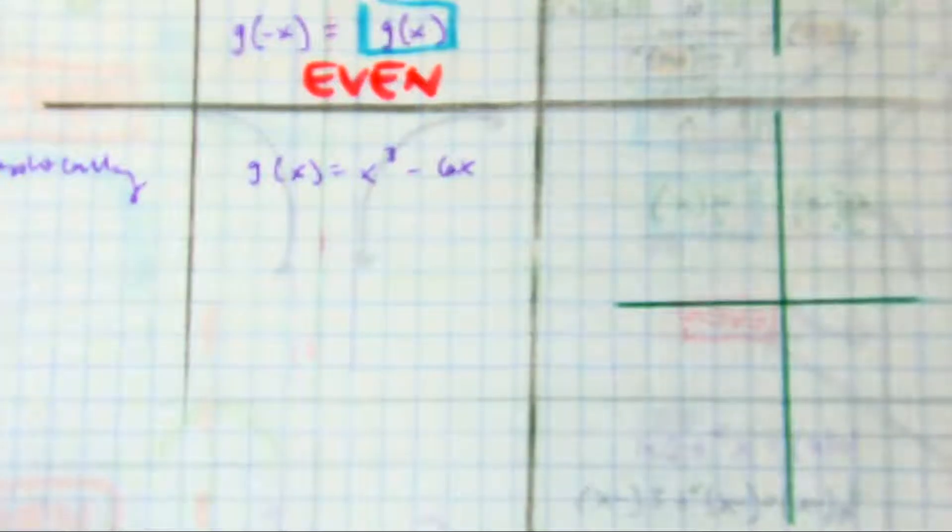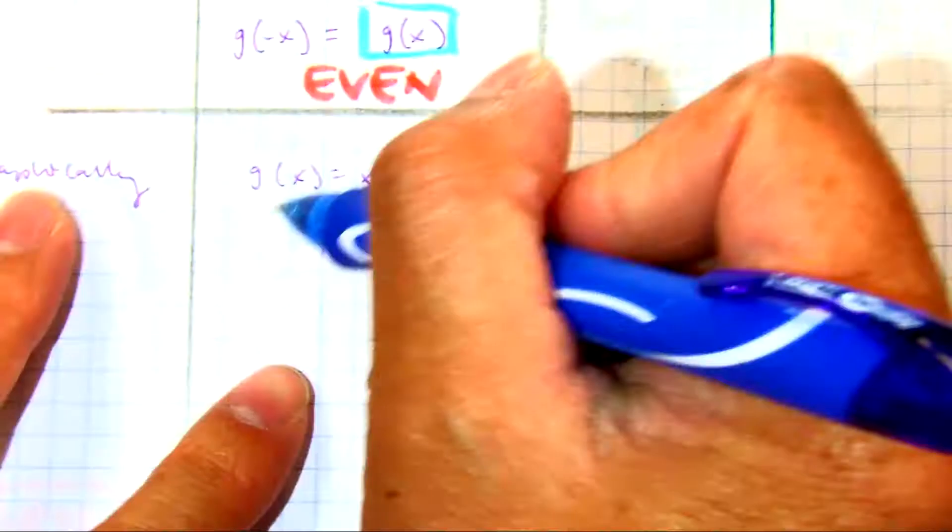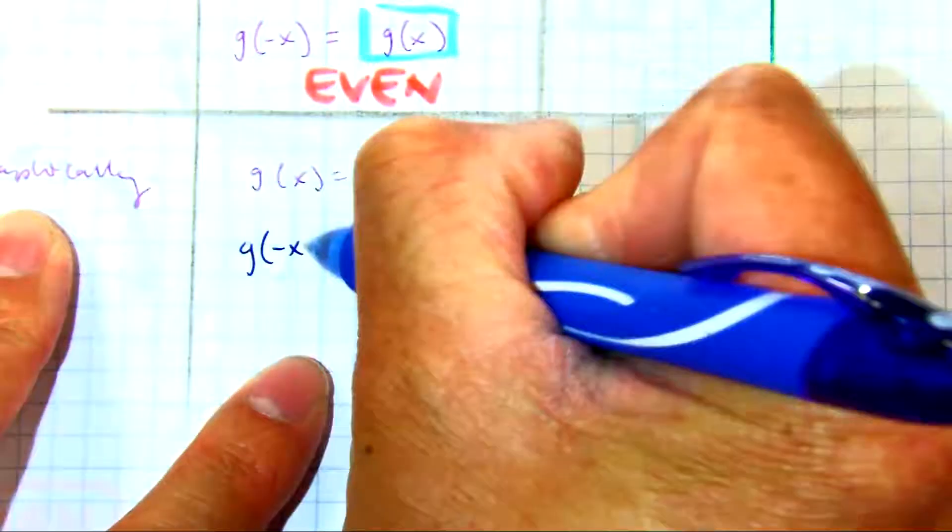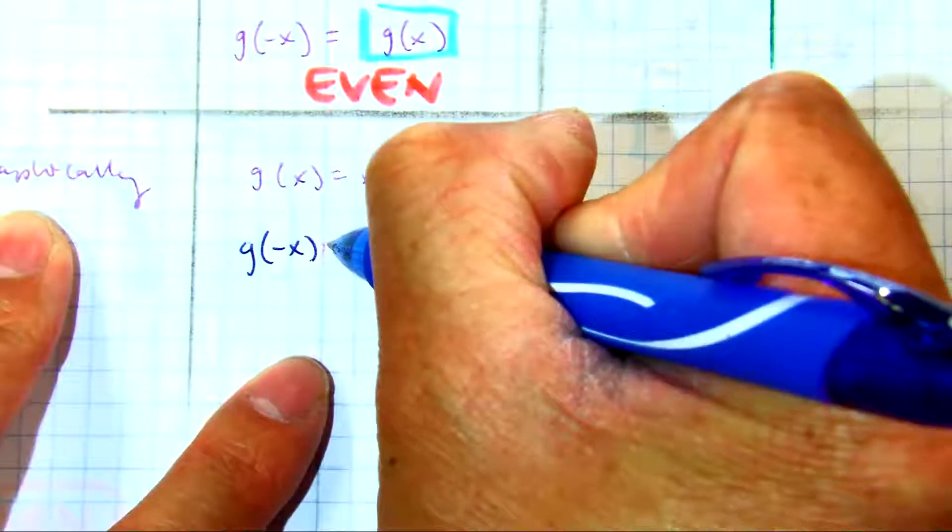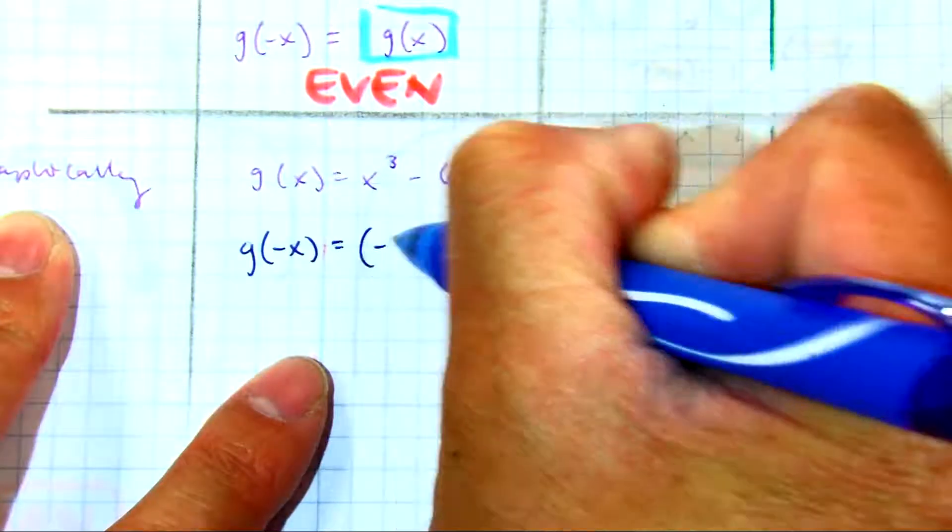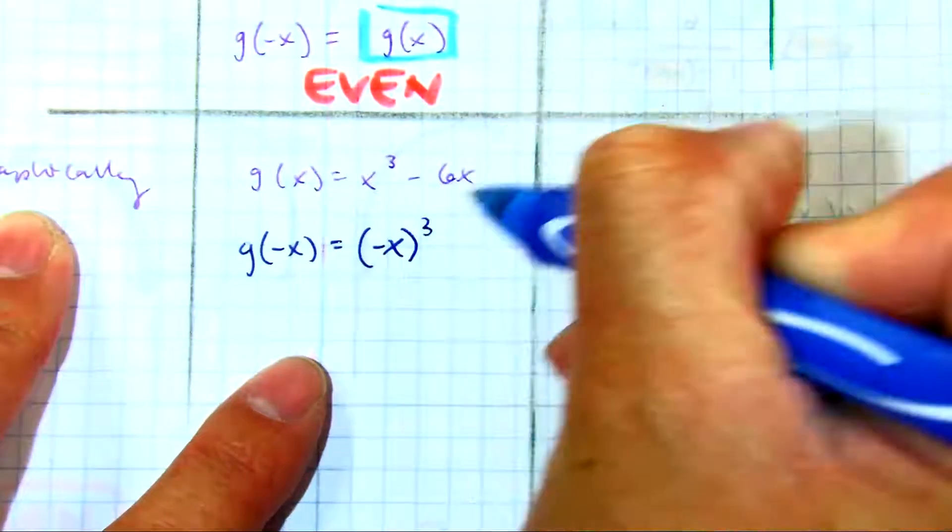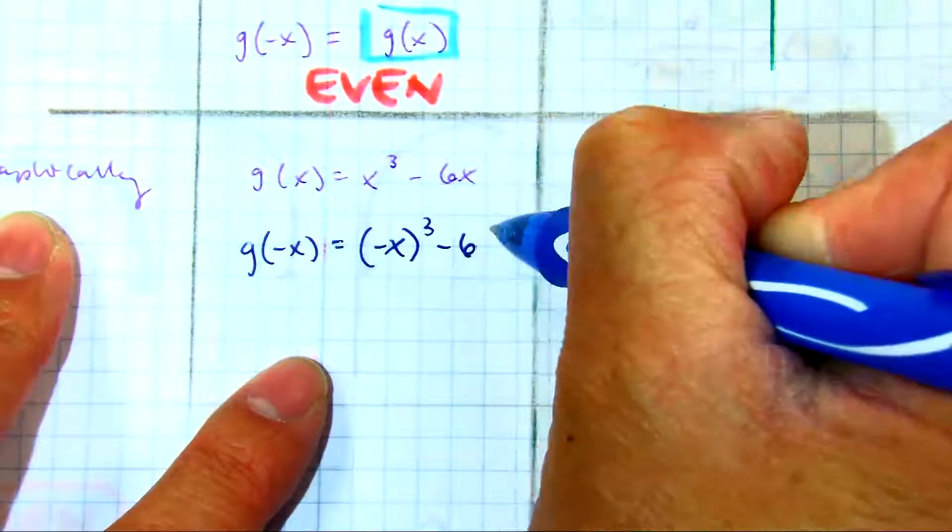Tell me what to do. g of negative x equals x cubed minus 6 times negative x.